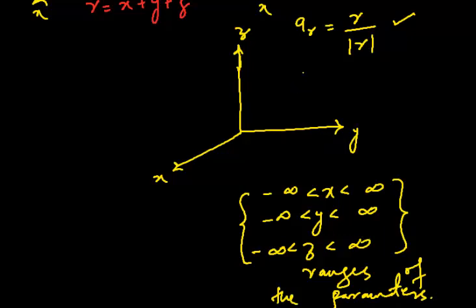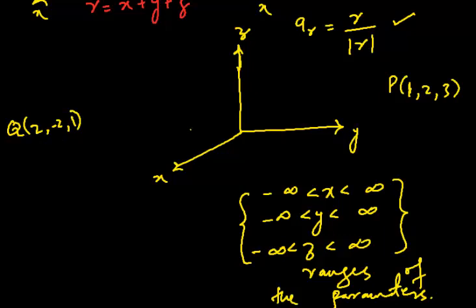These are the three variables and their ranges in the rectangular coordinate system. Now if we have a vector at a point P which is (1, 2, 3) and another vector at a point Q which is (2, -2, 1), let me draw dashes to represent unit blocks — this is one, and this is one in each direction, so this is two in x, and so on.